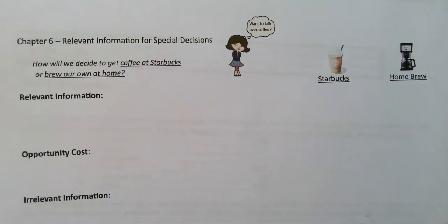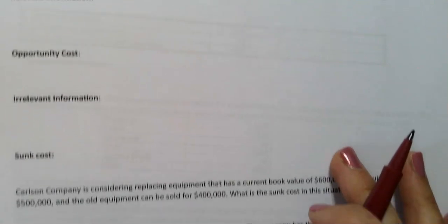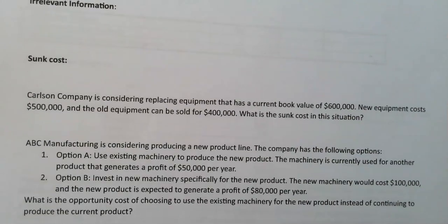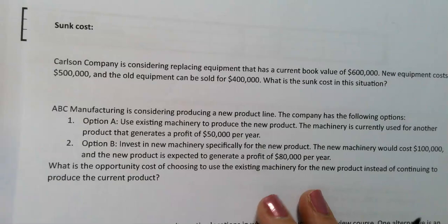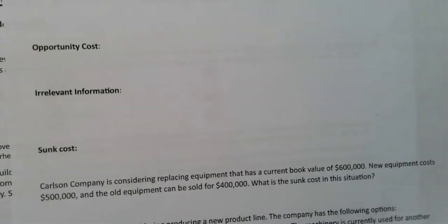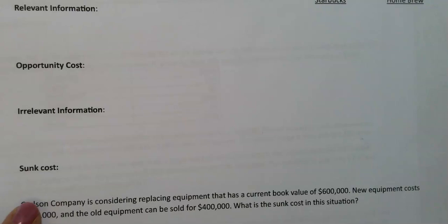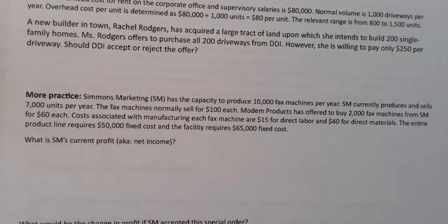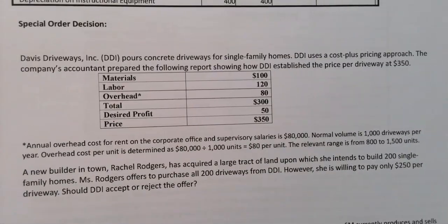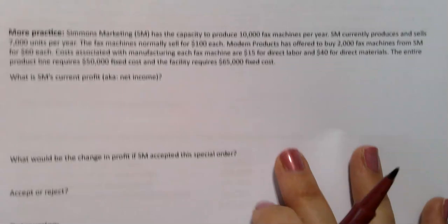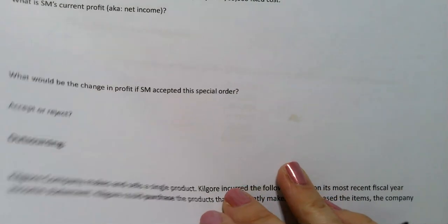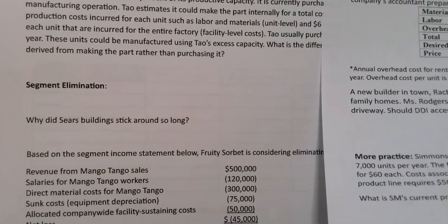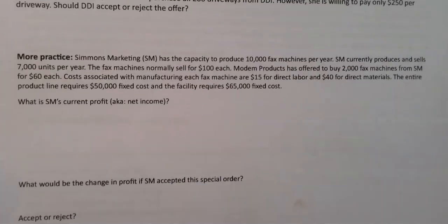This is quite a bit different than what we've been talking about so far. We're going back into some information from the past — we'll talk about period and product costs, and we're going to start categorizing costs into new words. We'll cover opportunity costs, sunk costs, and use this terminology to make special order decisions, outsourcing decisions — should we make it or buy it — and segment elimination, where we look at divisions of a business and decide which ones are profitable and which are not.